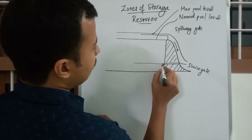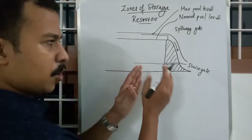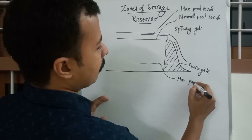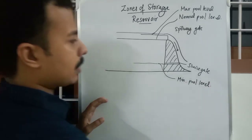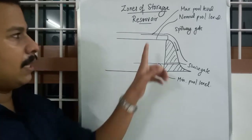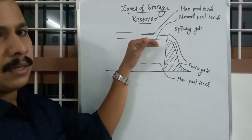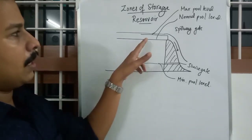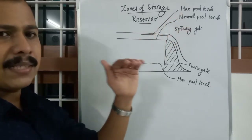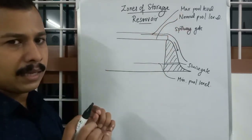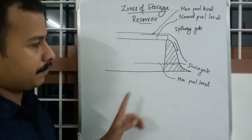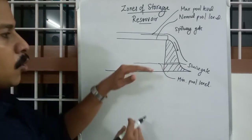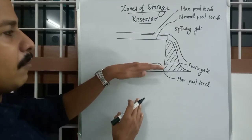The sluice gate level — the level at which water can be drawn through the sluice gate — is called the Minimum Pool Level. So the three types of levels are: Normal Pool Level, which is the normal level of water in the reservoir not during flood or drought; Maximum Pool Level, which occurs at the time of a flood event at the reservoir site; and Minimum Pool Level, which is the level of the sluice gate.